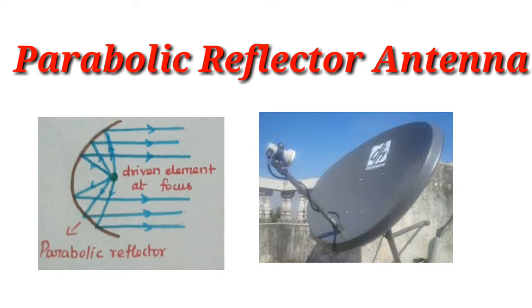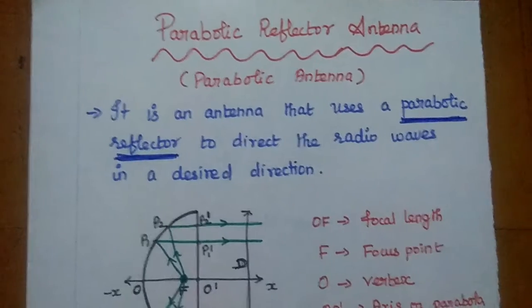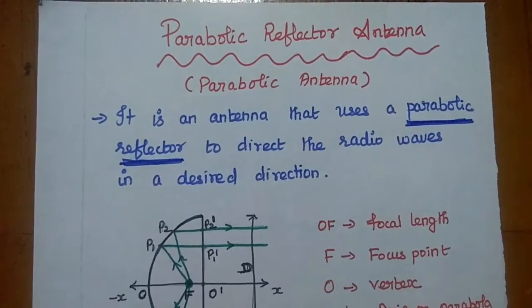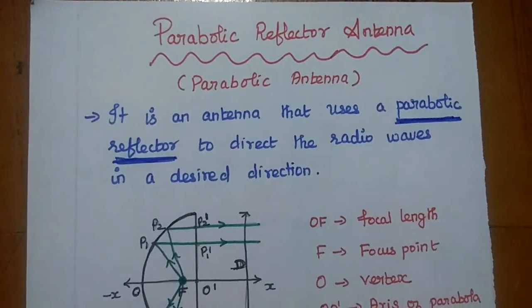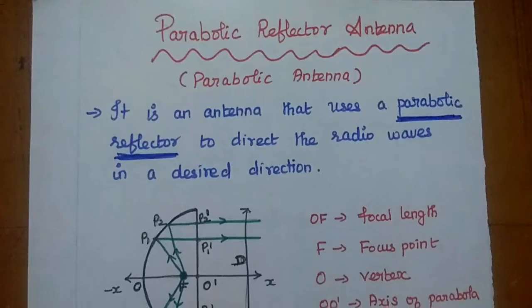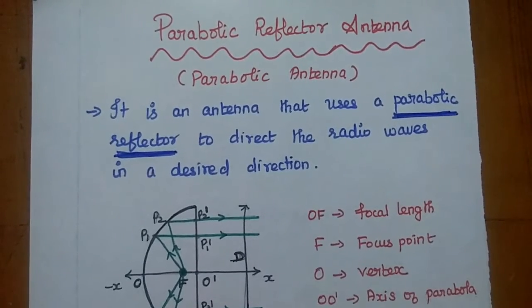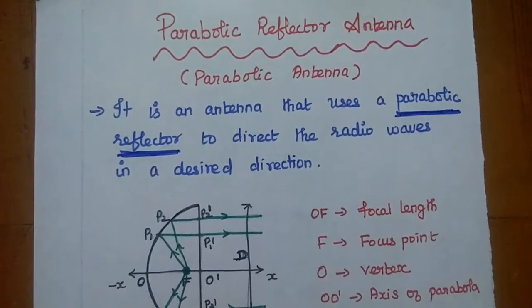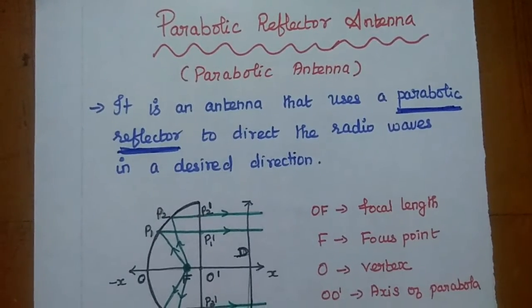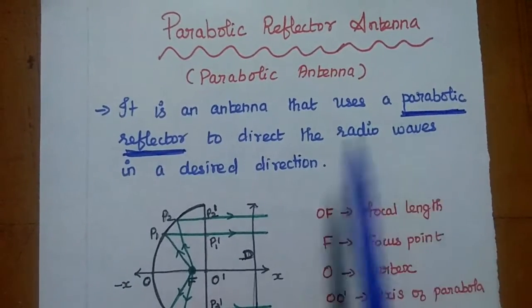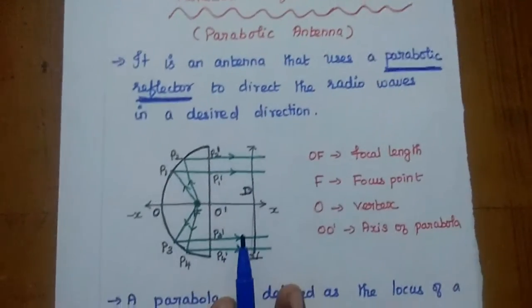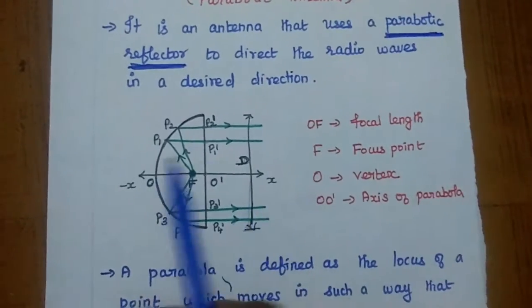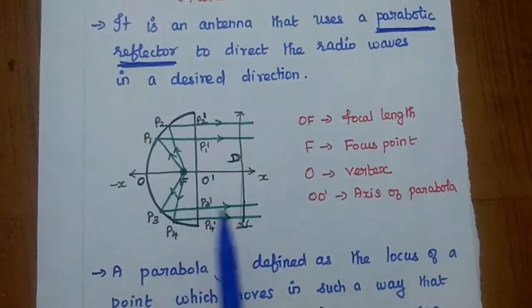Dear students, now we are going to discuss about parabolic reflector antenna and its characteristics and application. Parabolic reflector antenna is also called as paraboloidal reflector or paraboloidal antenna. It is an antenna that uses a parabolic reflector to direct the radio waves in the desired direction as a parallel beam.